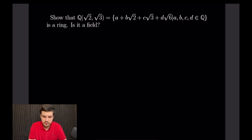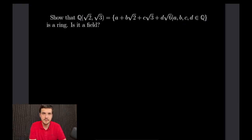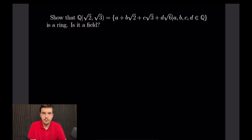To show something is a ring, we need to prove: the set with addition is an abelian group, that multiplication is associative and distributive from the left and right, and that it is closed under multiplication. Let's start by proving that this set with addition is an abelian group.